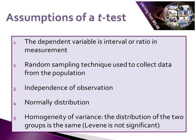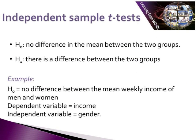There is a statistical test which allows you to test for a violation of this assumption, and it is called the Levene's test of equality of variance. As with all tests, you need to set up your hypotheses. Your null hypothesis is that there is no difference in the mean between two groups. The alternative is that there is a difference between the means of the two groups. In the example of mean weekly income and gender, our null hypothesis is that there is no difference between the mean weekly income of men and women.